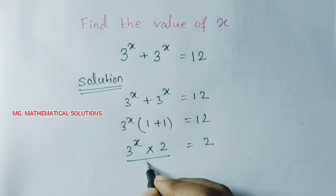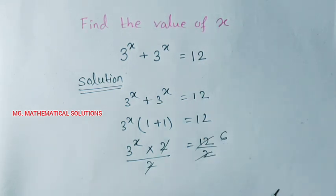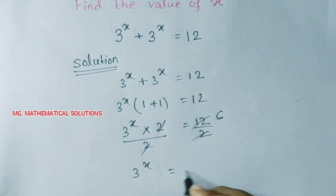Now we divide by 2 on both sides, 2 to cancel, 6 times 2 equal to 12. So 3 to the power x equal to 6.